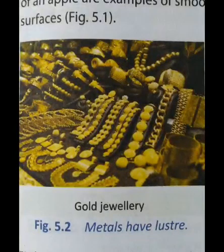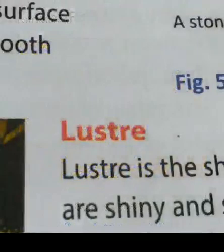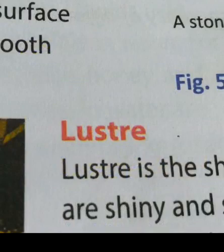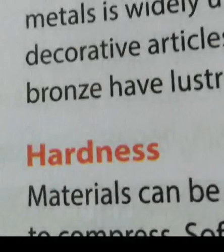Gold jewelry has luster. Metals shine because of luster. If metals are pure then they are shiny and this property is called luster. Hardness is another property. Materials can be hard or soft depending upon the ability to compress them. Hard materials are difficult to compress while soft materials are easily compressible.